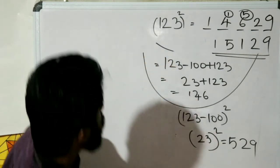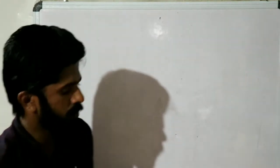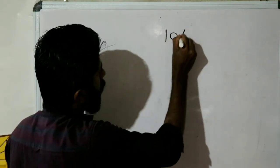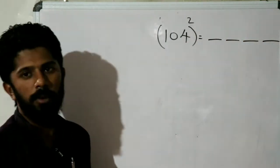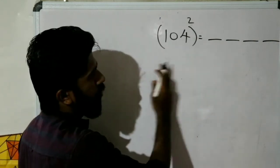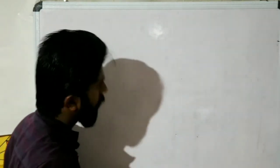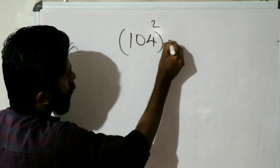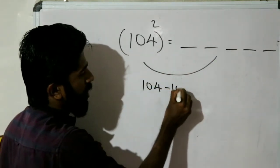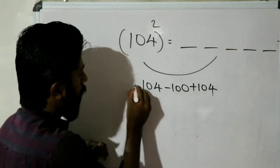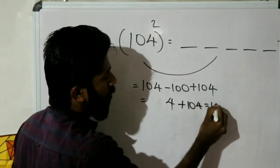Let's take another example. What is 104 whole square? One, zero, four — that's a three-digit number. First step: 104 minus 100 plus 104 equals 108. Second step: 104 minus 100 whole square, which is 4 squared equals 16.